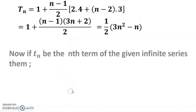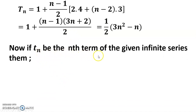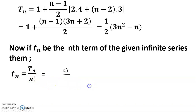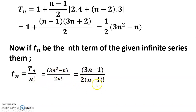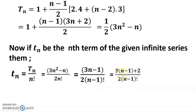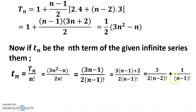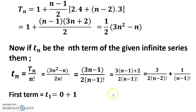Now if Tn is the nth term of the given infinite series, then Tn/n! equals (3n²)/(2·n!) + (3n−1)/(n−1)! + 3/(n−1) + 2/(2·(n−1)!) + 3/(2·(n−2)!) + 1/(n−1)!